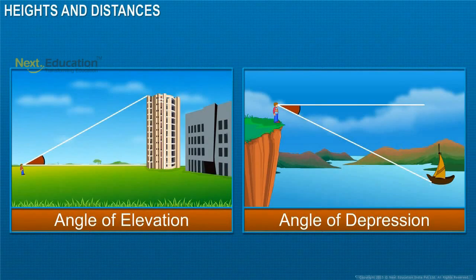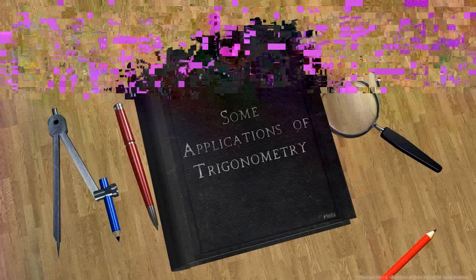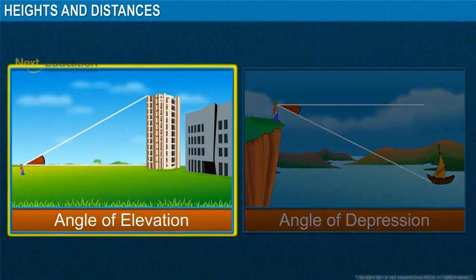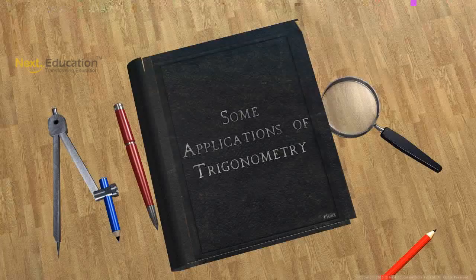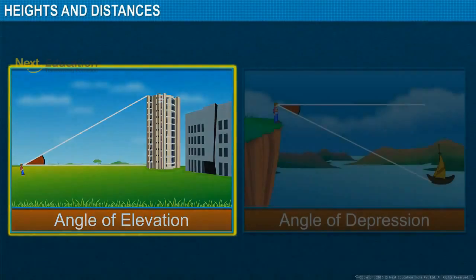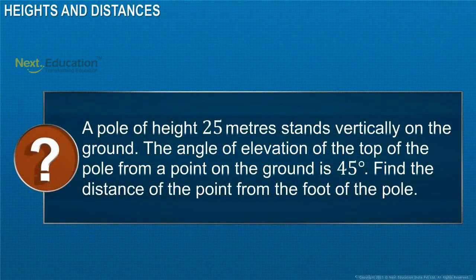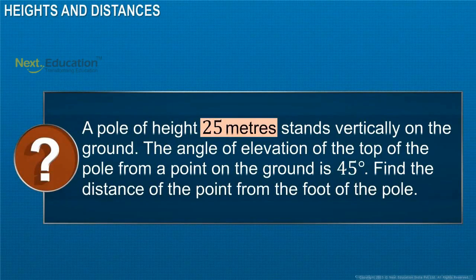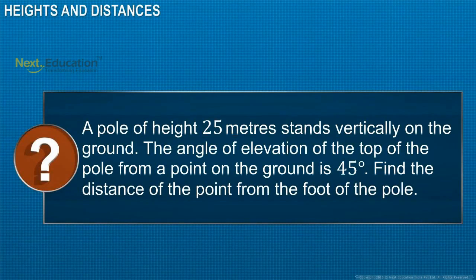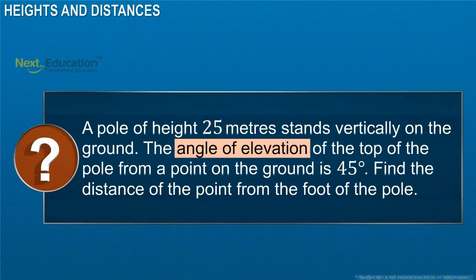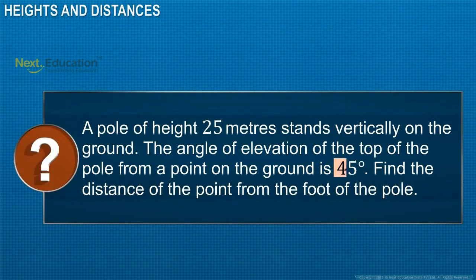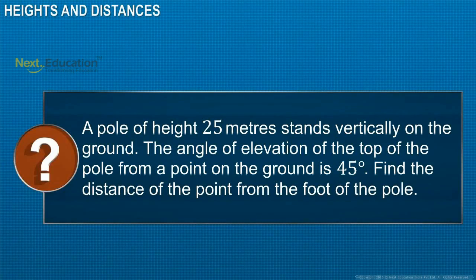Let's see some examples on how angles of elevation and depression can be used to find the heights of objects. A pole of height 25 meters stands vertically on the ground. The angle of elevation of the top of the pole from an observation point on the ground is 45 degrees. We have to find the distance of the observation point from the foot of the pole.